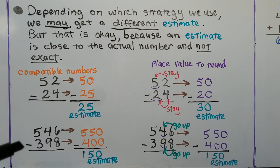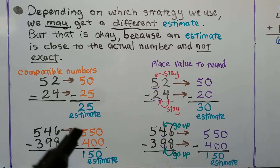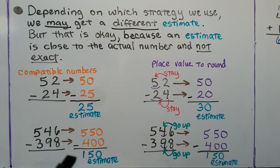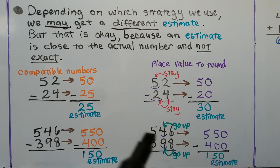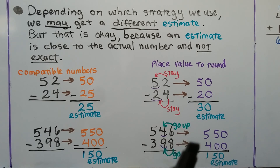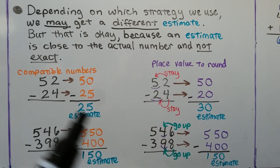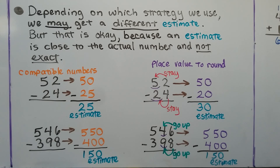For 546 minus 398 using compatible numbers, we'd use 550 and 400, giving an estimated difference of 150. If we use place value rounded to the nearest tens place, the 6 tells the 4 to go up, so it rounds to 550. The 8 tells the 9 to go up one more ten, adding to the hundreds place, so it rounds to 400. 550 minus 400 is about 150 — the same as the compatible number result. So it depends on which strategy and which place value you're rounding to.